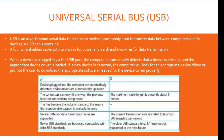Universal Serial Bus (USB) is an asynchronous serial data transmission method commonly used to transfer data between computers and devices. A USB cable contains a four-wire shielded cable with two wires for power and earth and two wires for data transmission. When a device is plugged in via the USB port, the computer automatically detects that a device is present and the appropriate driver is loaded. If a new device is detected, the computer will look for an appropriate device driver or prompt the user to download one.